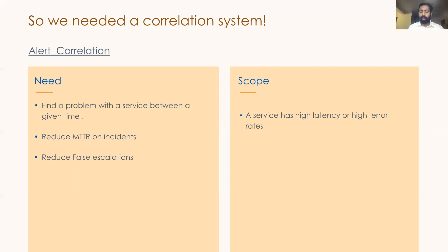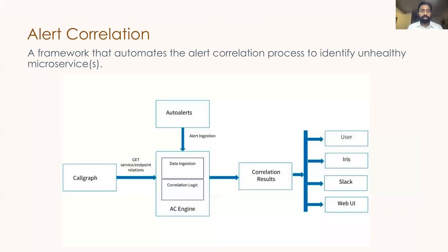We came up with something called an event correlation or alert correlation system. It's a framework that automates the alert correlation process to identify unhealthy microservices, giving a very strong signal-to-noise ratio — strongly identifying if something is broken and exactly what in the stack is broken. Alert correlation depends primarily on metrics, and LinkedIn services have a lot of metrics. Since LinkedIn is highly microservice-oriented, it's important to understand dependencies, so we built something called a call graph that maps which service calls which other service.